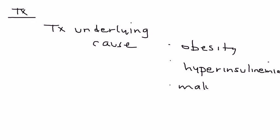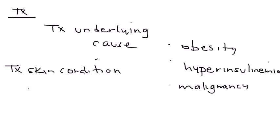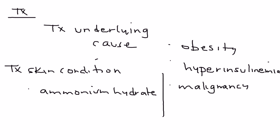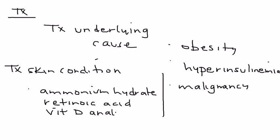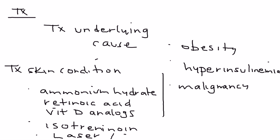In terms of treatment, you have to treat the underlying cause — obesity, hyperinsulinemia, or the malignancy. For treating the actual skin condition, first-line medications include ammonium hydrate, retinoic acid, and vitamin D analogs. Second-line includes stronger medications such as isotretinoin. For cases not helped by these initial medications, you can use laser or even surgical excision.